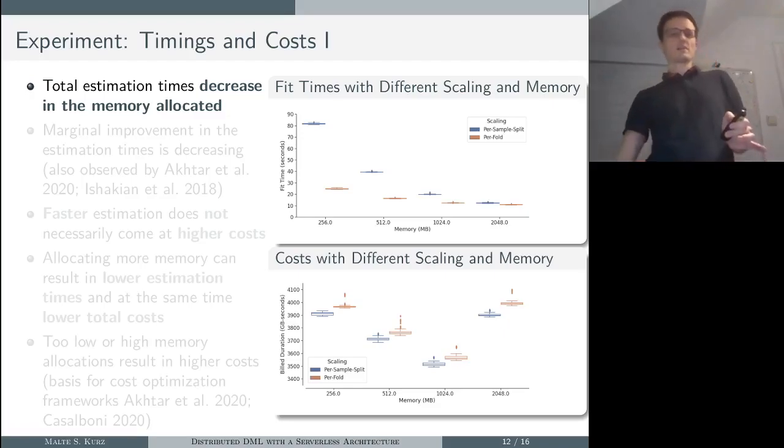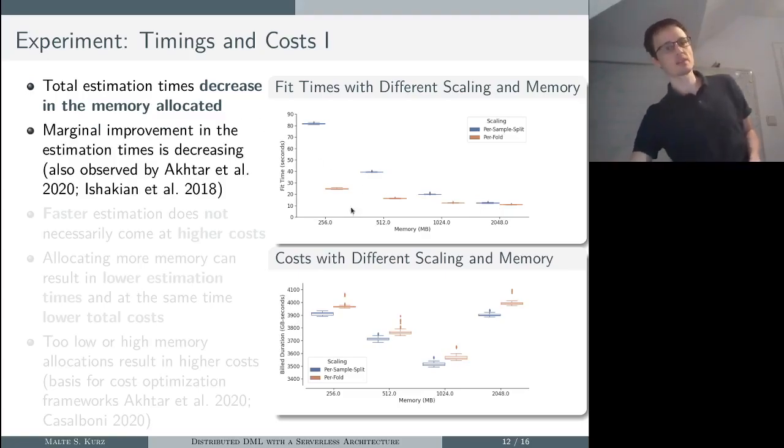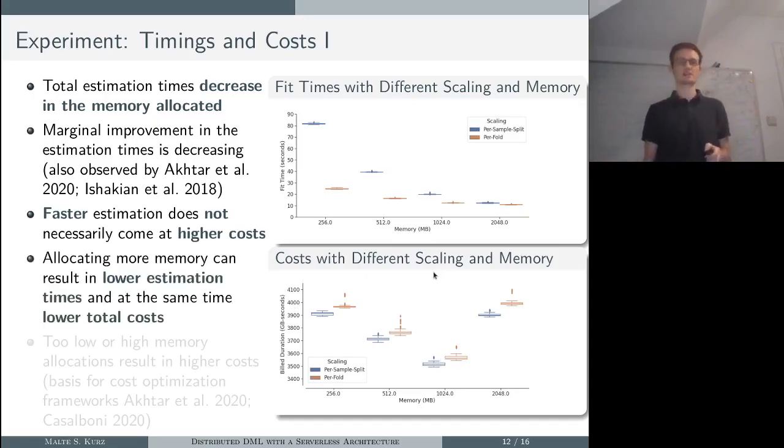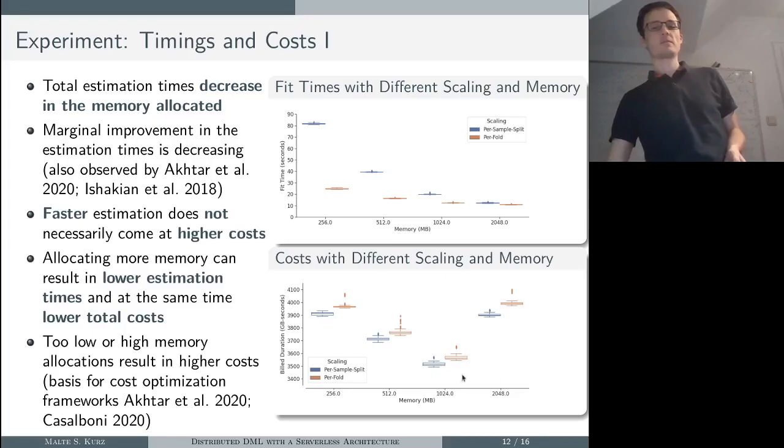Now let's take a look at the experiment results. On the right top you see the fit times, bottom the costs. If we allocate more memory, the fit times decrease. The marginal improvement is actually decreasing, which is something that has been observed in the literature already. What is interesting is that faster estimation does not necessarily come at higher costs. We get faster estimations but still lower costs, so that's quite interesting—at the same time, allocating more memory can result in lower estimation times and lower total costs. What we can see at the bottom is that allocating too little or too much memory usually results in an inefficient setting in terms of costs, and that's something that was also already observed in the literature.